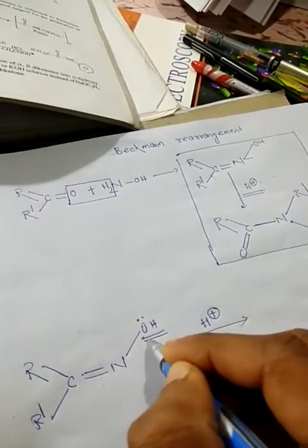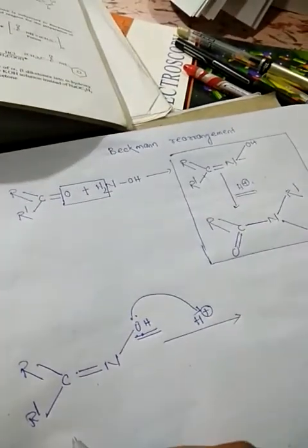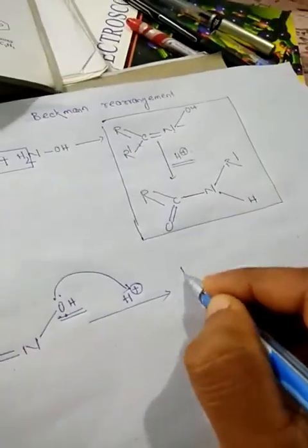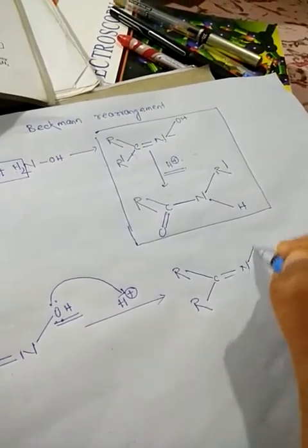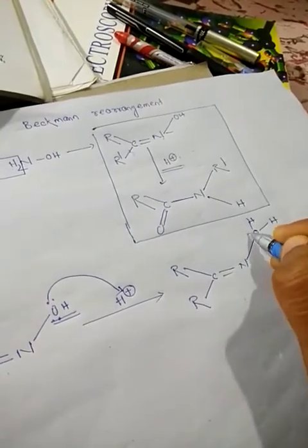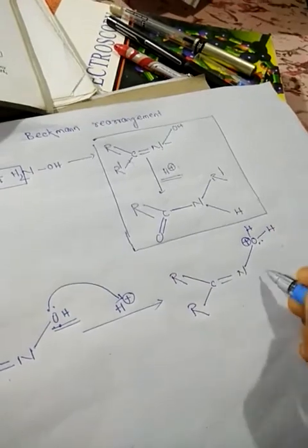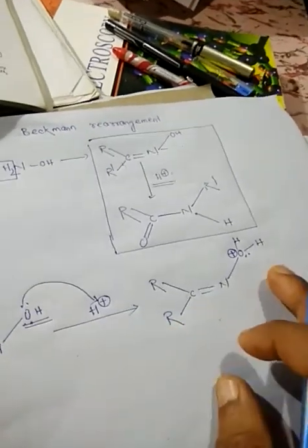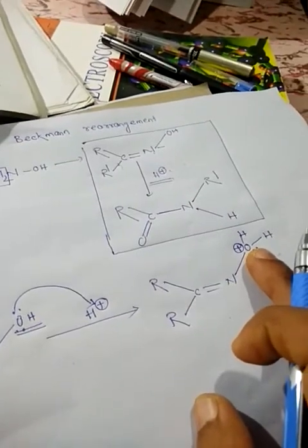Oxygen contains two lone pairs. One of the lone pairs will interact with this H+ and this one becomes OH2+. Due to loss of the lone pair, it will acquire a positive charge. Now this one is a protic acid.